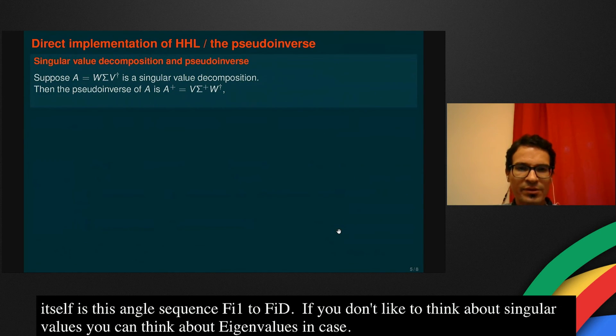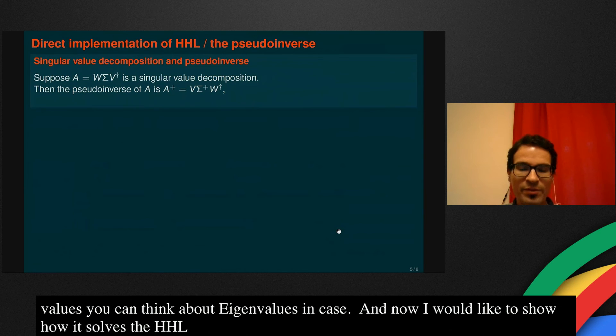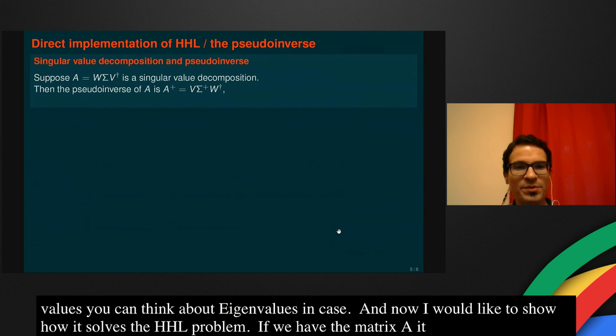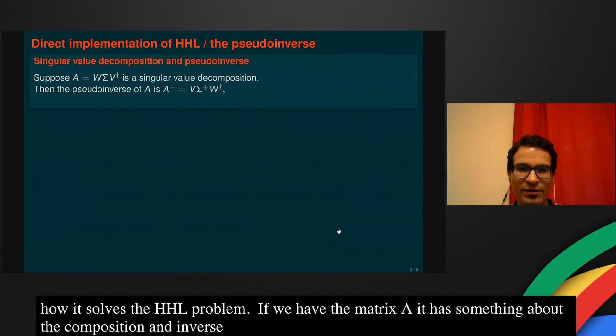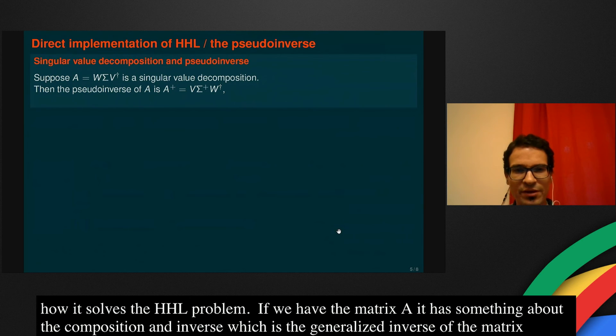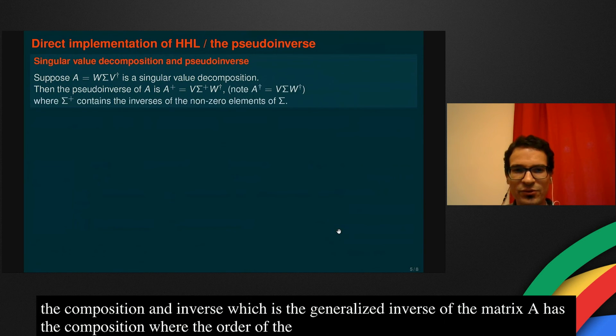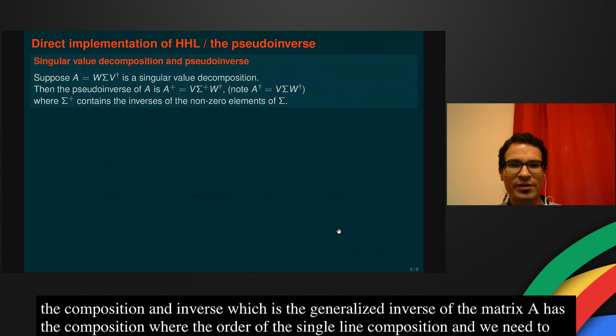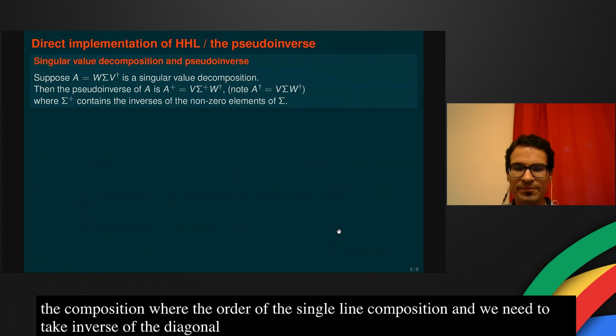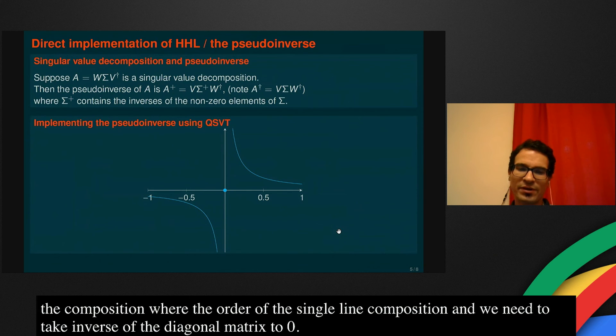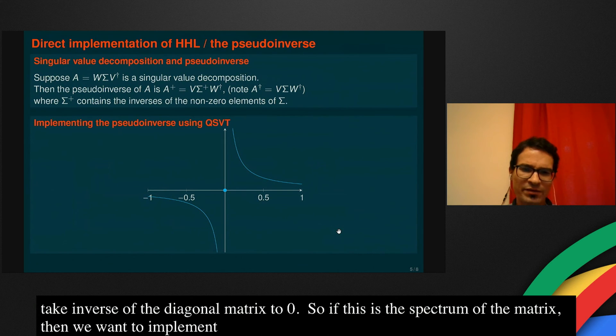Now I would like to show how it solves the HHL problem. If we have the matrix A, then it has some singular decomposition. And the pseudo inverse, which is the generalized inverse of the matrix A, denoted by A plus, has this decomposition, where we need to reverse the order of the unitaries in the singular value decomposition. And we need to take the inverse of the diagonal matrix elements that are nonzero. So if this is the spectrum of the matrix, then we want to implement the 1 over x function. But this is not a bounded function, and we need to use bounded functions. And it's also not continuous, so we can't do this in general.